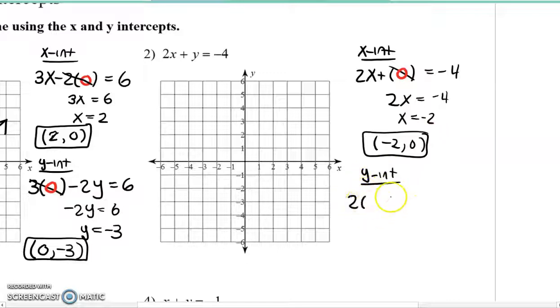Here's y-intercept. Zero for x. Boom. Gone. And this time, y is just equal to negative four. There's nothing I have to divide to get y by itself. Therefore, this is zero comma negative four.